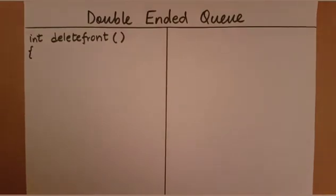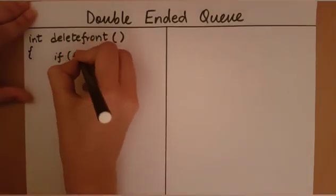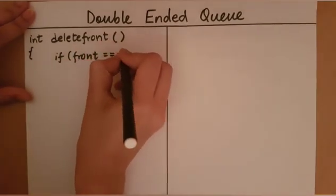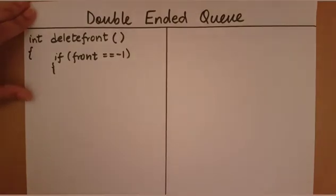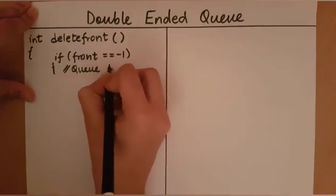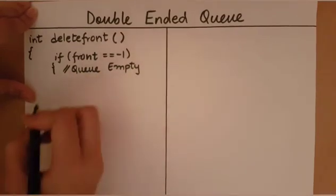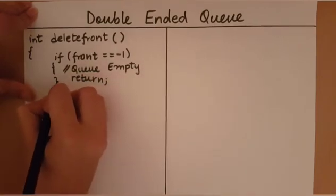The first thing we must check when we delete an element from a queue is whether the queue is empty. The queue is empty when front is equal to minus one and rear is equal to minus one. In this case there is no scope for deleting any element, so we return from the function.